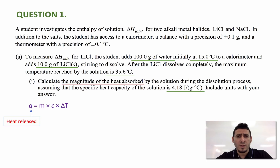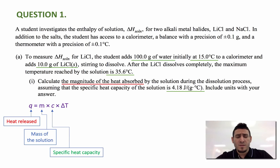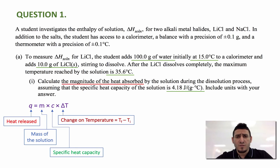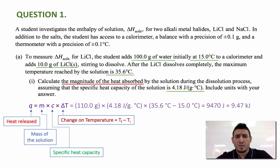Where q is the heat released or heat absorbed by the solution, m is the mass of the solution, which is equal to 100 grams of water plus 10.0 grams of lithium chloride, giving 110.0 grams. C is the specific heat capacity of the solution, 4.18 joules per gram degree Celsius. Delta T is the final temperature minus the initial temperature, which is 35.6 minus 15.0 degrees Celsius. Replacing m, c, and delta T by their values, we get 110.0 grams multiplied by 4.18 joules per gram degree Celsius, multiplied by 20.6 degrees Celsius. Cancelling the units, the answer is 9,470 joules.